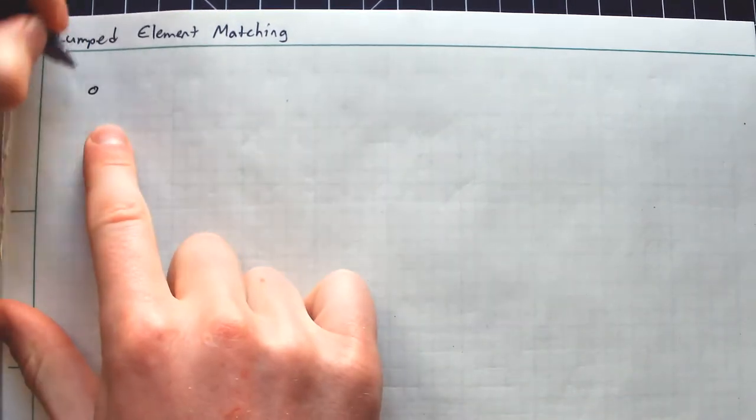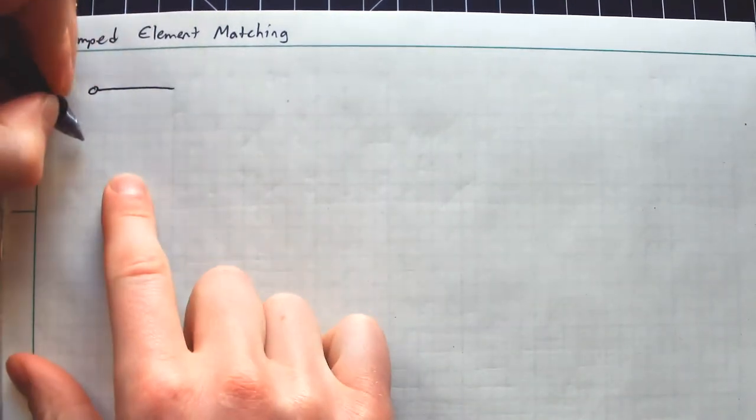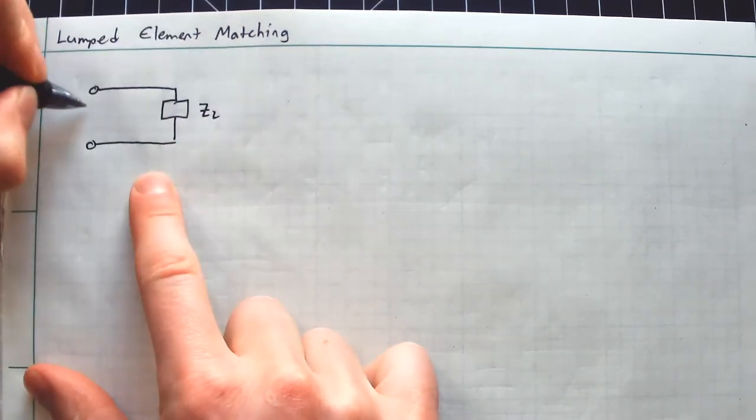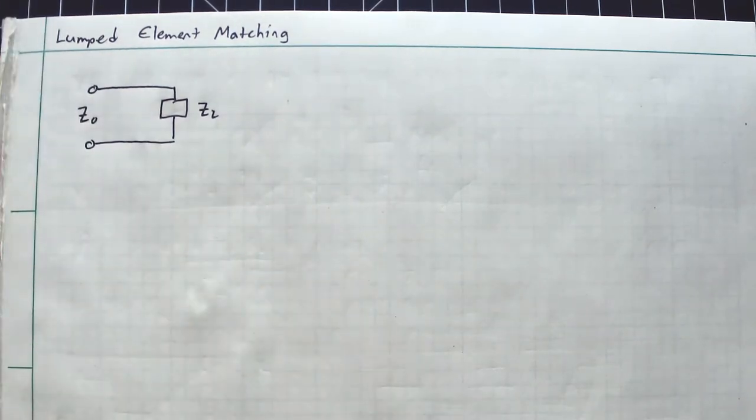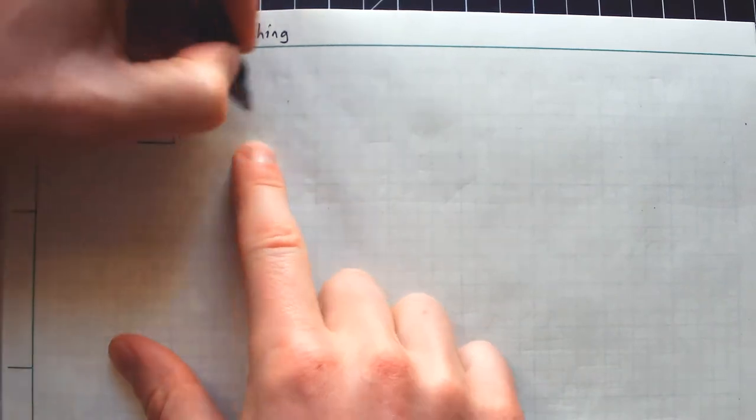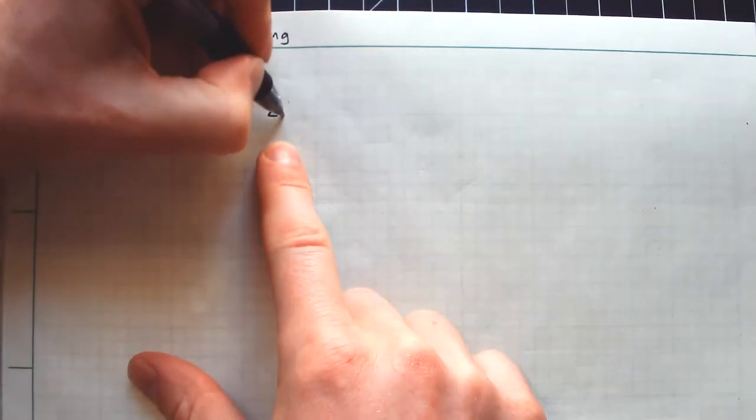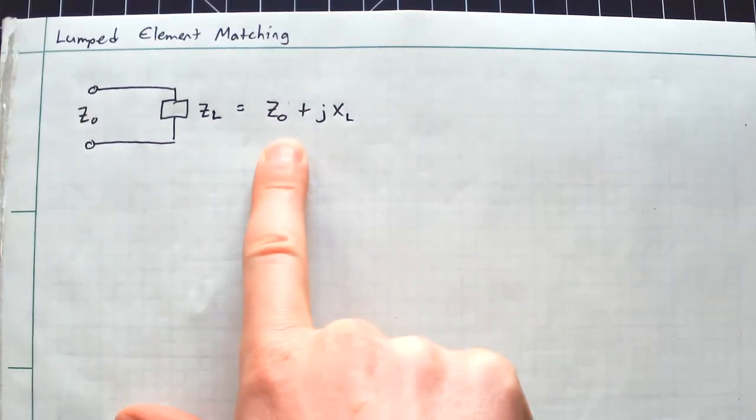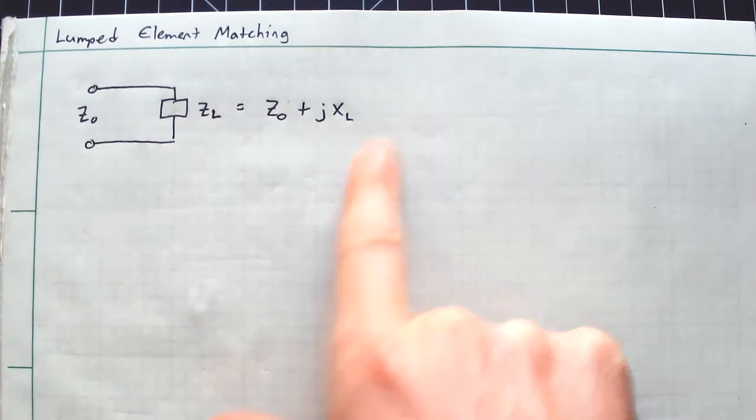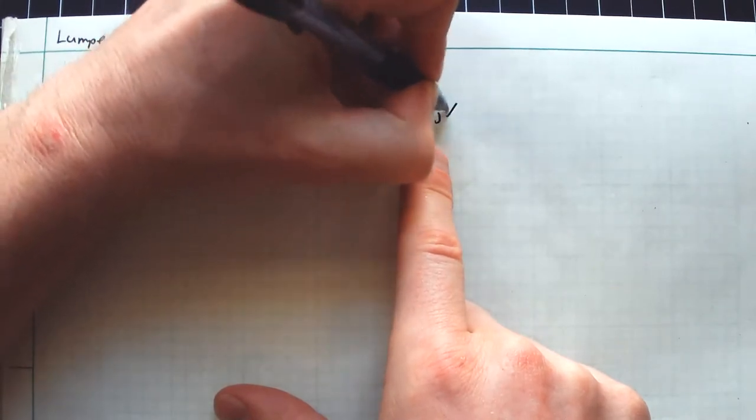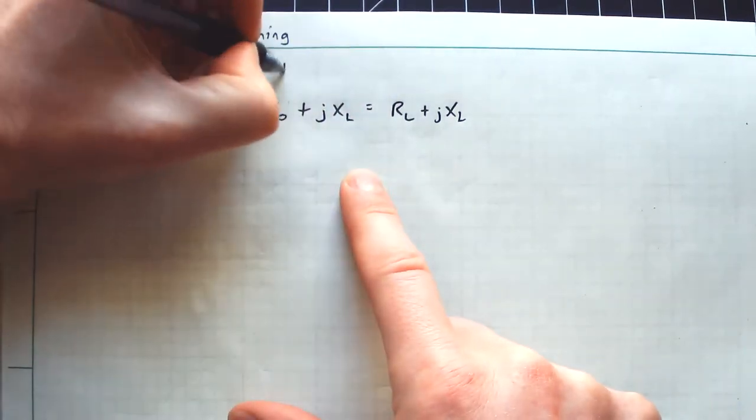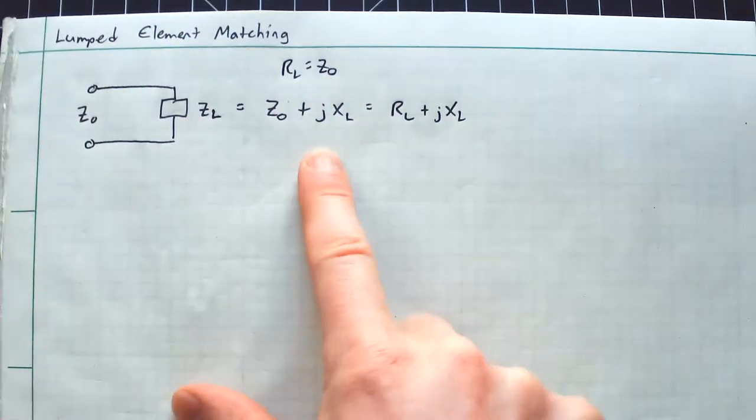I want you to imagine a transmission line, something like this. Here is a load, I'm going to write this as ZL, and we're feeding it with some characteristic impedance Z0. For the sake of argument, let's suppose my load impedance is Z0 plus some reactance X sub L. So the real part is matched to my transmission line, but the imaginary part isn't. More generally, I can say RL plus jXL, but in this case I am going to impose the condition that R sub L is equal to Z0.